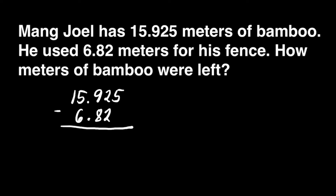So let's do it here — we'll add a zero. Next, subtract normally. Remember to put the decimal point in the answer. We can subtract the way we do with whole numbers. We're ready to subtract. 5 minus 0 is equal to 5. 2 minus 2 is equal to 0. 9 minus 8 is 1. Next, copy the decimal point so that we will not forget about it.